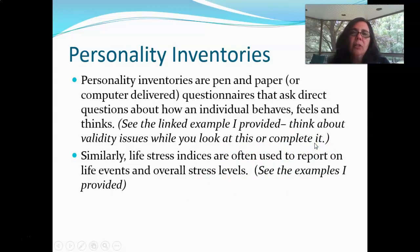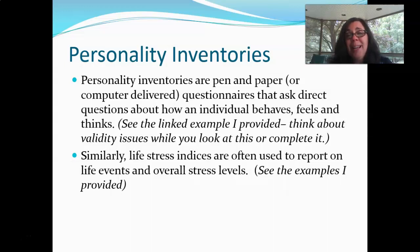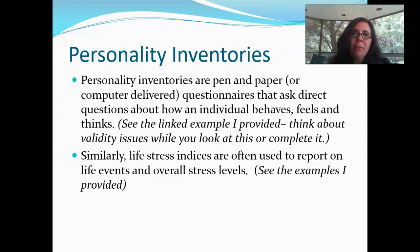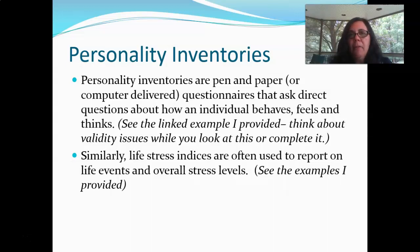Another way to gain information is through personality inventories. There's a linked example on our lecture video page — a website that shows you a personality inventory and actually gives you the opportunity to take it. Those in my theories of personality class will have already done that. Sometimes these are pen and paper, but more often lately they are computer delivered. These are sets of questionnaires asking the person directly how they feel. This is one example of a self-report measure. Self-report measures of various kinds — including depression inventories or suicidality inventories — simply ask the person direct questions about how they feel, behaviors they've engaged in, and experiences they've had.